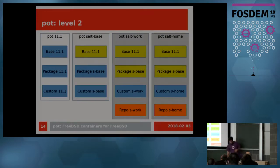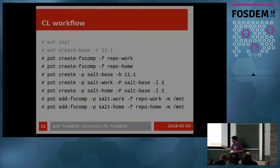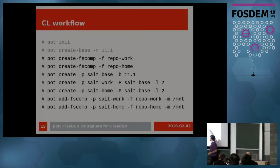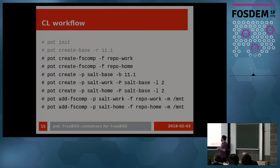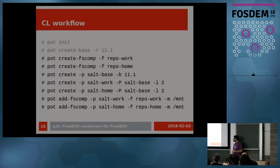Here's the workflow for that: I create filesystem components, then create the level 1 pot. For the level 2 pot, I say 'use salt-base as a reference' — that means you don't mount only one dataset read-only but two. Then I add the different filesystem components. This is a real case that I have on my laptop.